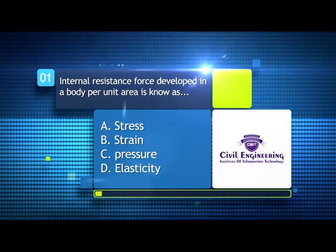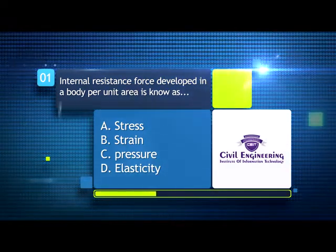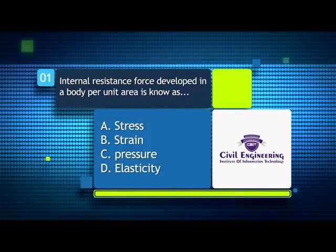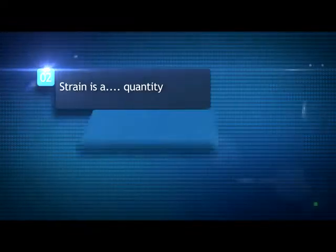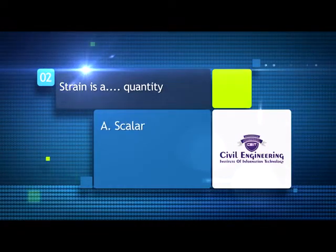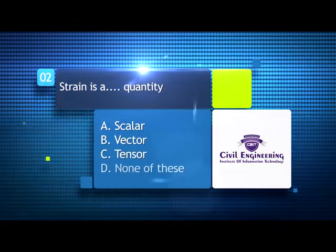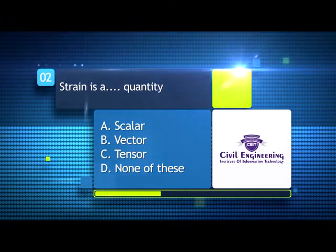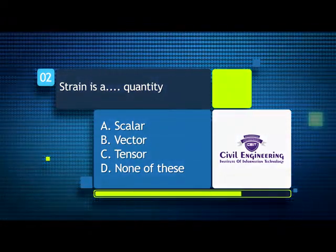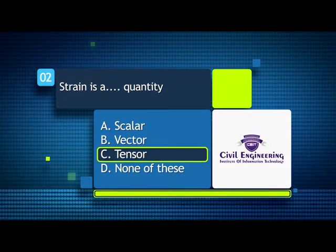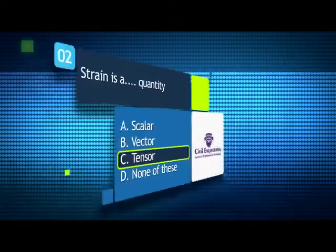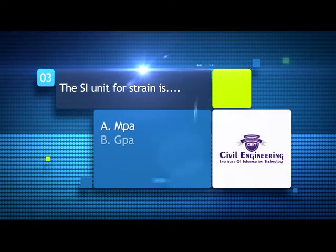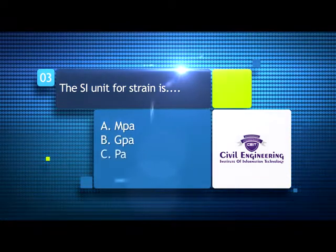Strain is a quantity — A) scalar, B) vector, C) tensor, D) none of these. The SI unit for strain is: A) MPa, B) GPa, C) Pa, D) none of these.